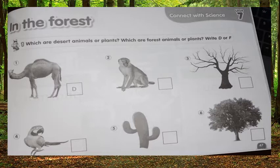Now, in the forest — do we remember the desert and the desert animals? Which animals or plants are desert animals or plants, and which are forest animals or plants? In front of desert animals or plants we write the letter D, and in front of forest animals and plants we write F. So the camel lives in the desert — amazing! What about the monkey? The monkey was a forest animal — excellent!